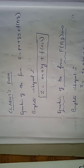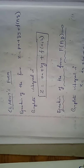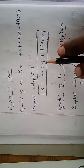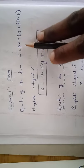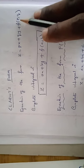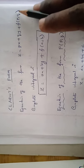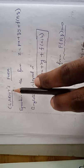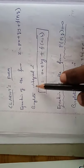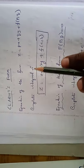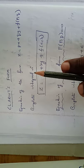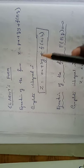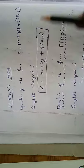The Chariot's form. The equation of the form is z equal to px plus qy plus function of p comma q. This is the Chariot form. The complete integral of the Chariot form is z equal to ax plus by plus function of a comma b.